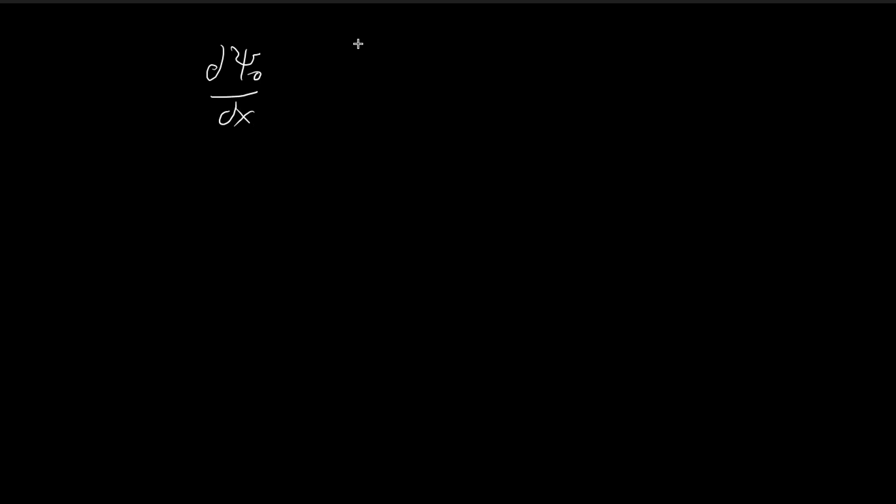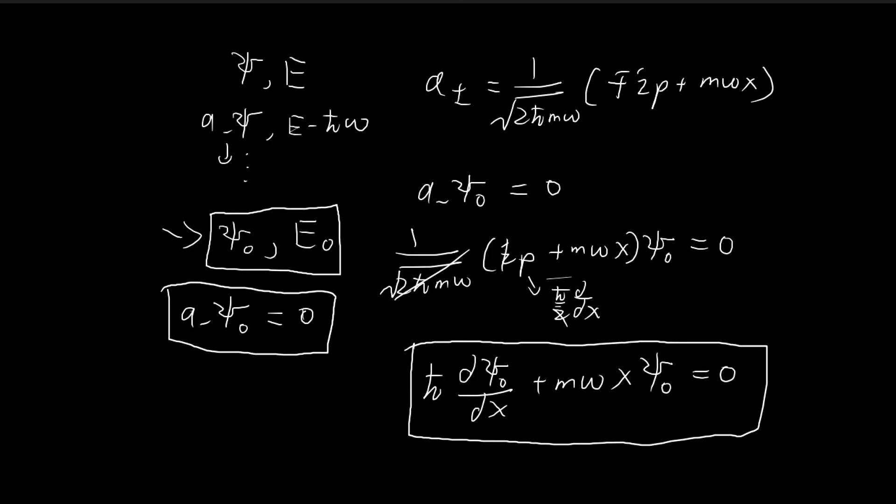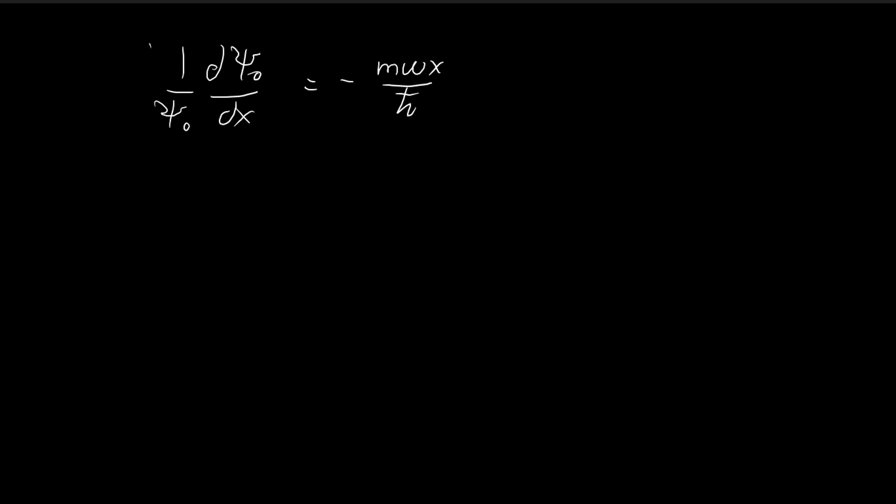Solving that, I'm going to move the terms to the other side: mωx divided by ℏ, and then dump this over to the other side. Now I'm going to integrate both sides with respect to dx. Obviously for the right-hand side, we get this expression plus the constant of integration. Here I'm going to use substitution, and this becomes ln|ξ|. Raising both sides to the power of e, I get some constant times e^(-mωx²/2ℏ).